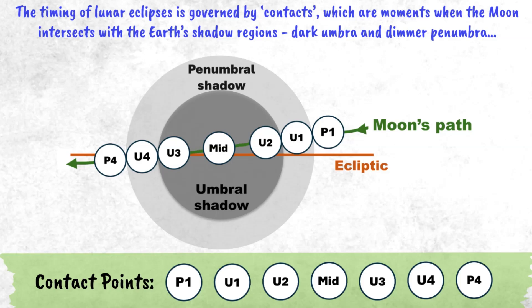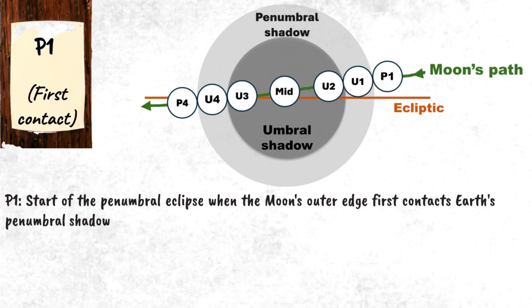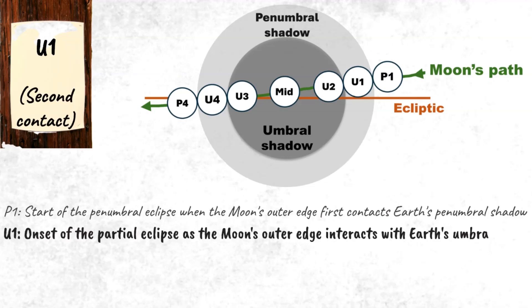Let's review each one. Contact point P1, or the first contact, marks the start of the penumbral eclipse, when the Moon's outer edge first touches Earth's dimmer penumbral shadow. Contact point U1, or the second contact, signifies the onset of the partial eclipse, as the Moon's outer edge begins to interact with Earth's darker umbral shadow.